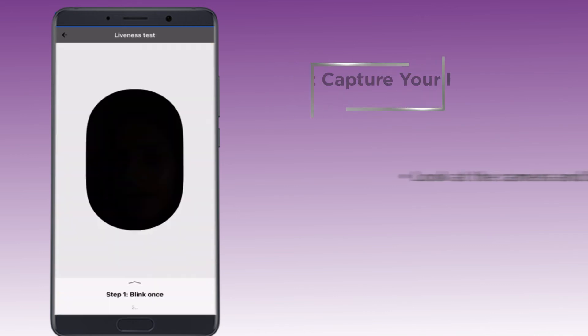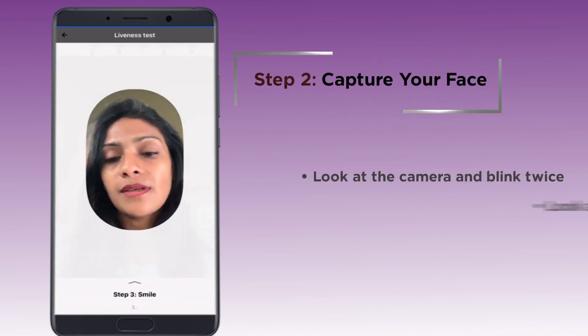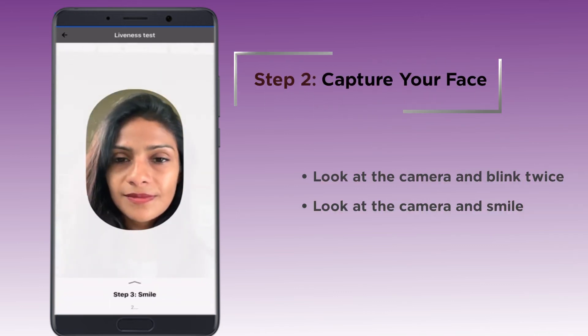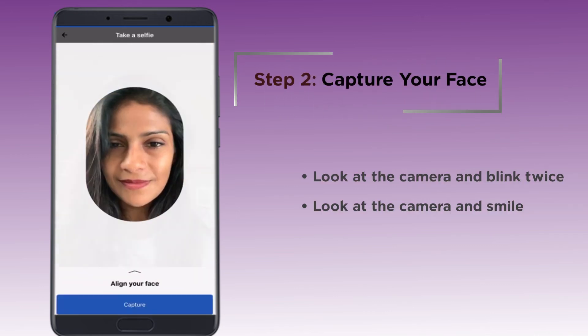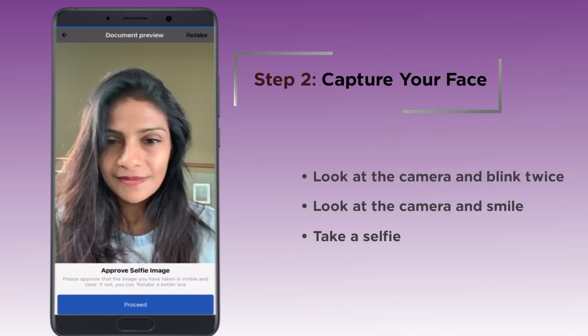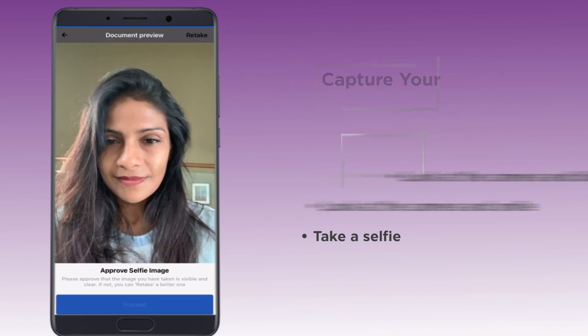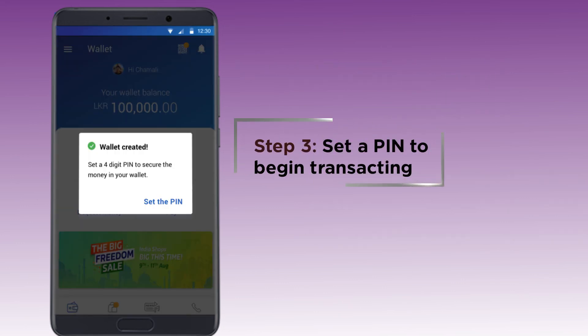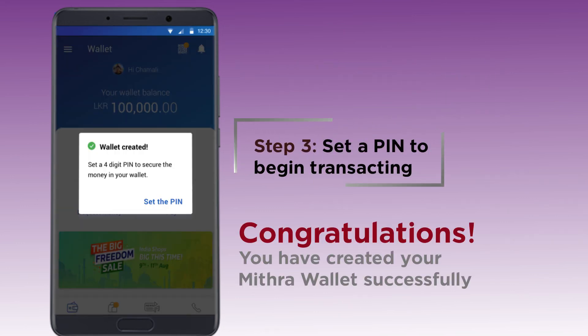Look at the camera and blink twice. Then look at the camera and give it your best smile. Next, take a selfie. Set a PIN to begin transacting. Congratulations! You have created your Mitra wallet successfully.